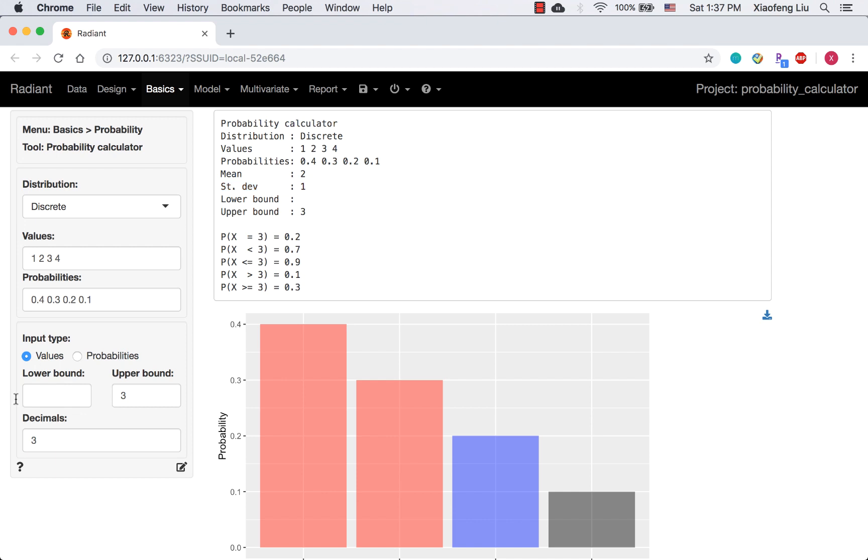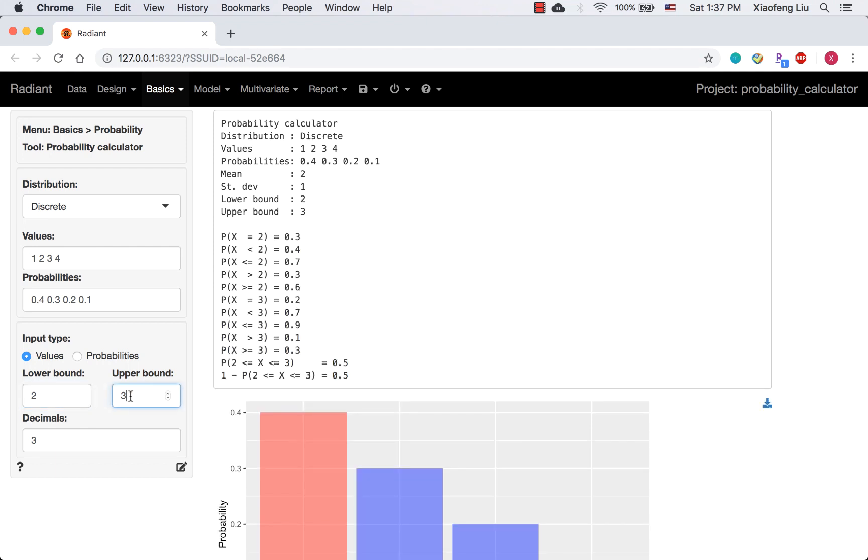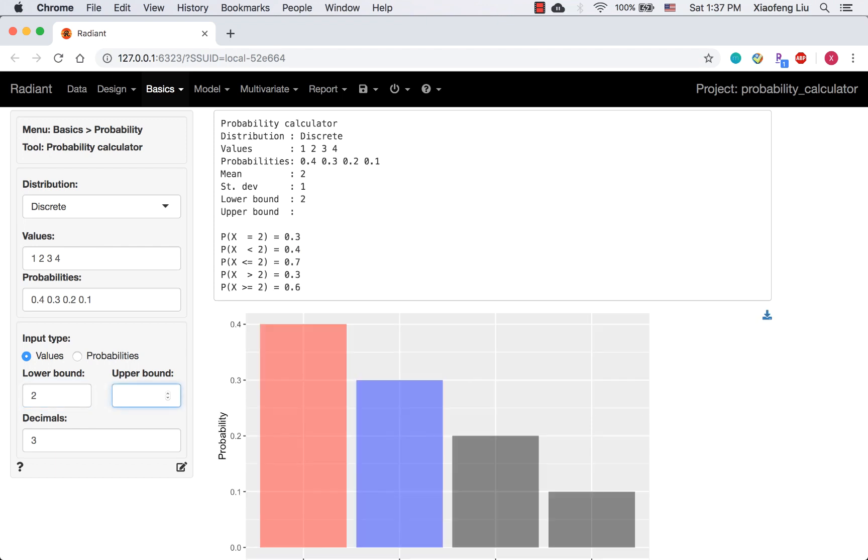For the second question, we would like to get the probability of x that is greater than or equal to 2. So we select values as input type, set lower bound as 2, and leave the upper bound as blank. We will get 0.6.